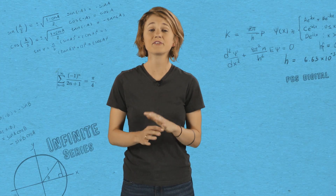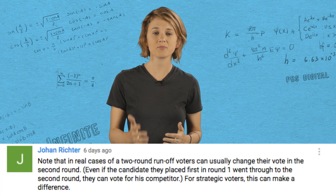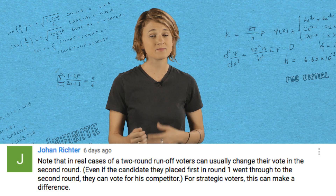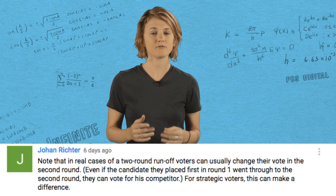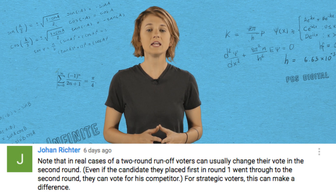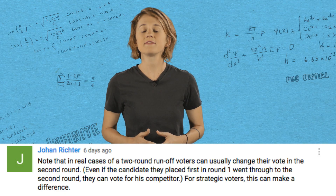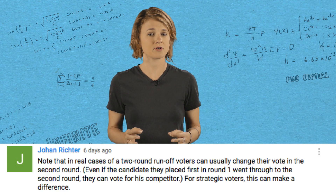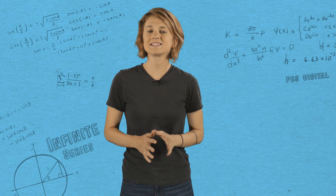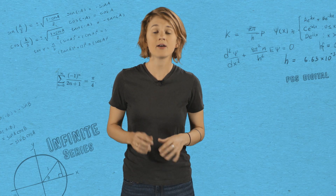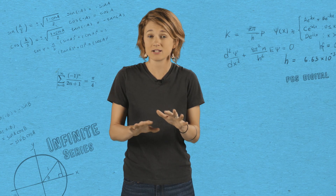There were a lot of great comments on our episode about voting systems. Johan Richter made an interesting point about the difference between idealized voting systems and the real world: in real cases of a two-round runoff, voters can usually change their vote in the second round, even if the candidate they placed first in round one went through. For strategic voters, this might make a difference. In fact, the Gibbard–Satterthwaite theorem says that any of the types of voting systems we've been looking at are susceptible to tactical voting, meaning that people might have an incentive not to vote honestly.